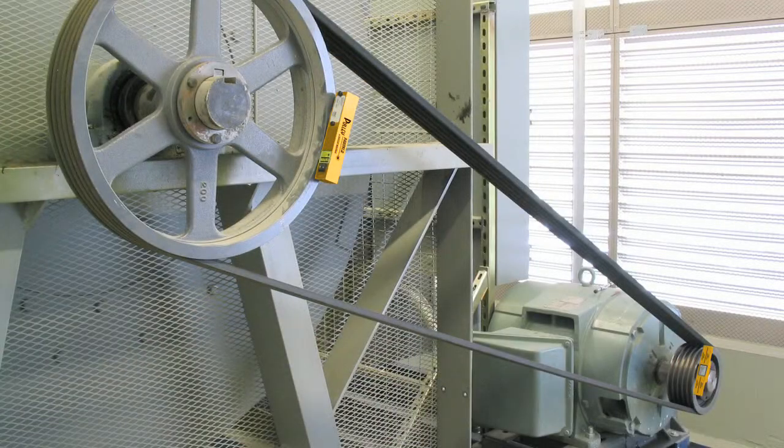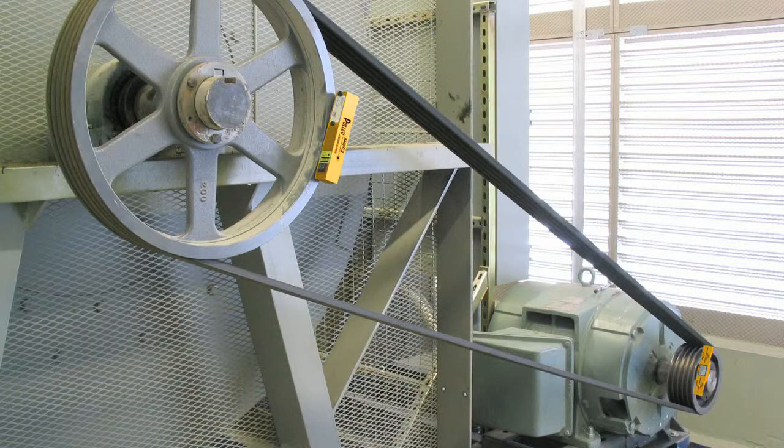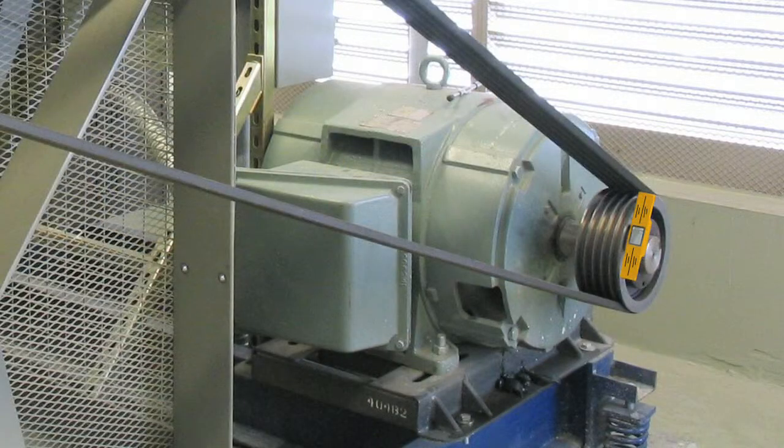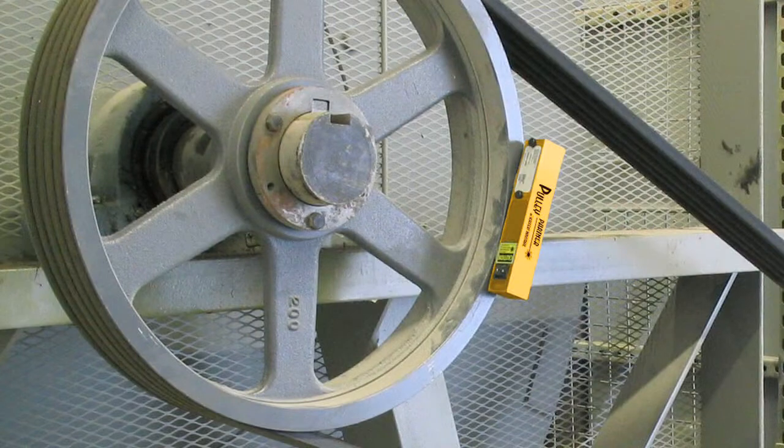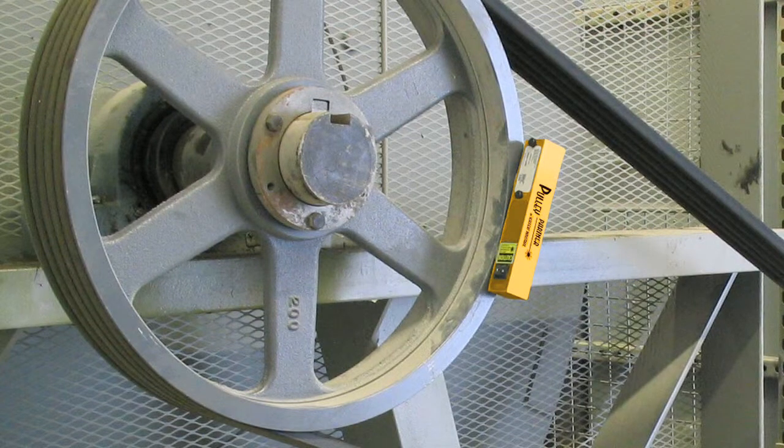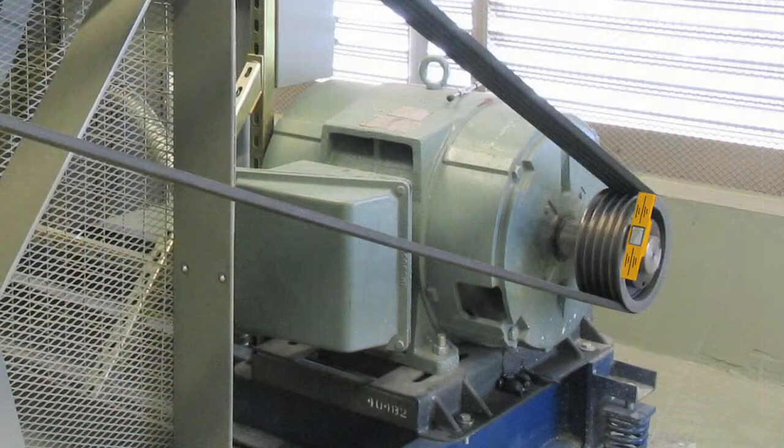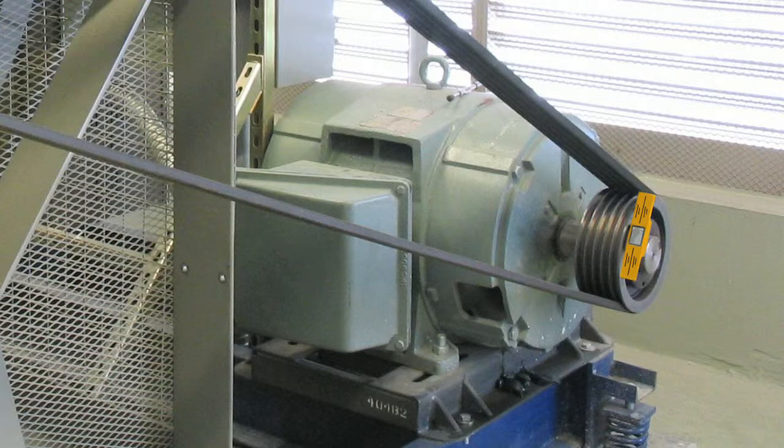Mount the units on the pulley faces to be aligned. The reflector is mounted to the pulley to be moved, or the adjustable pulley, while the laser transmitter is mounted to the stationary pulley. The movable pulley is often the smallest one and is often mounted on the motor shaft.